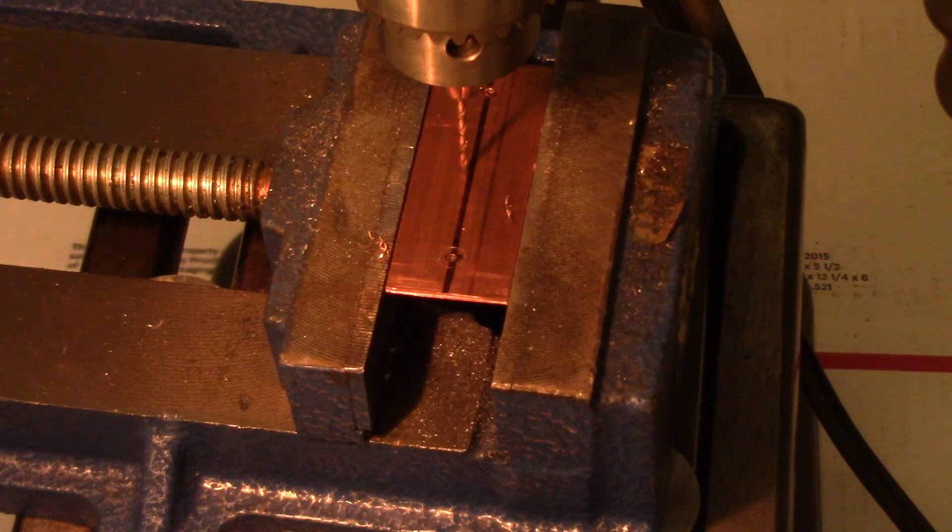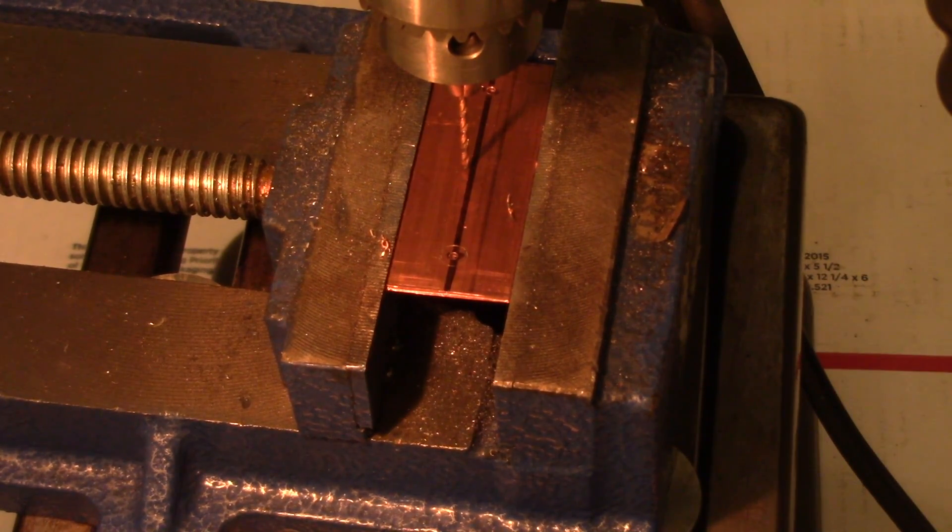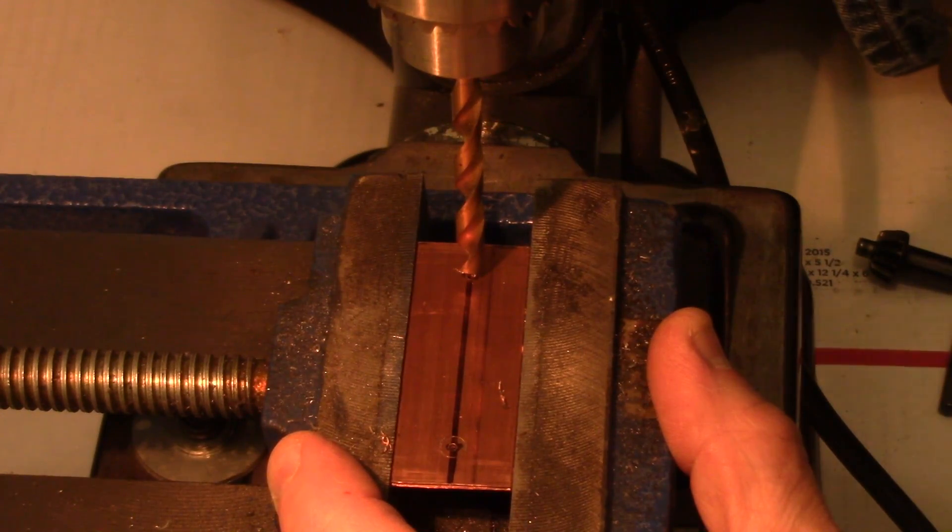What pilot holes do is stop the drill bit from skating. But I mean, I'm in a drill press, so it's not going to skate at all. But it looks good right now. I'm going to use my full-size bit. And the full-size bit is a 15.54 bit. So I'll put that on to do the final drill.